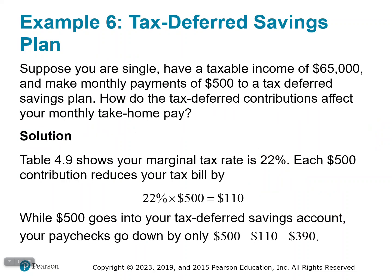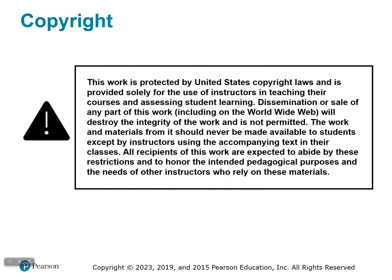Suppose you're single, have a taxable income of $65,000, and make monthly payments of $500 to a tax-deferred savings plan. How do the tax-deferred contributions affect your monthly take-home pay? According to the tax table, at $65,000 your tax rate is 22%. Each $500 contribution will reduce your tax bill by 22%, so by $110. While $500 goes into your tax-deferred savings account, your paycheck only goes down by $390. You're still going to pay that tax later. Thanks for watching — good luck on the homework, and let me know if you have questions.